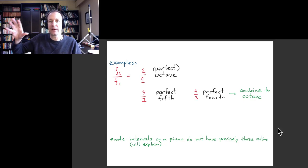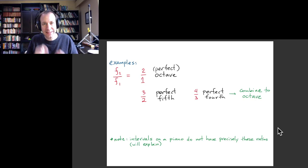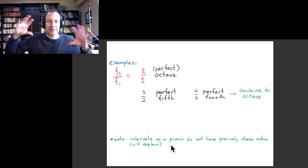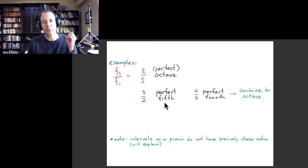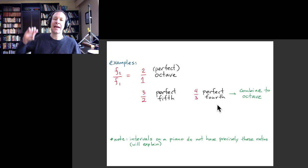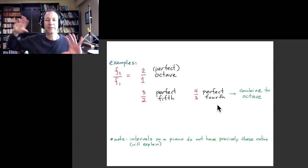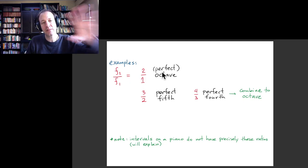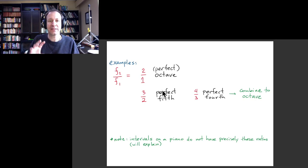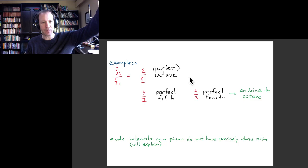A brief aside: when we talk about standard musical notes on a piano, the intervals are slightly different from these. If you play a perfect fifth on a piano it's not exactly three over two, and a perfect fourth is not exactly four over three — I'll explain why in the next video. These exact ratios are what we call just tuning, the most natural ratios we associate with these intervals. The octave, as far as I know, is always an exact doubling of frequency.